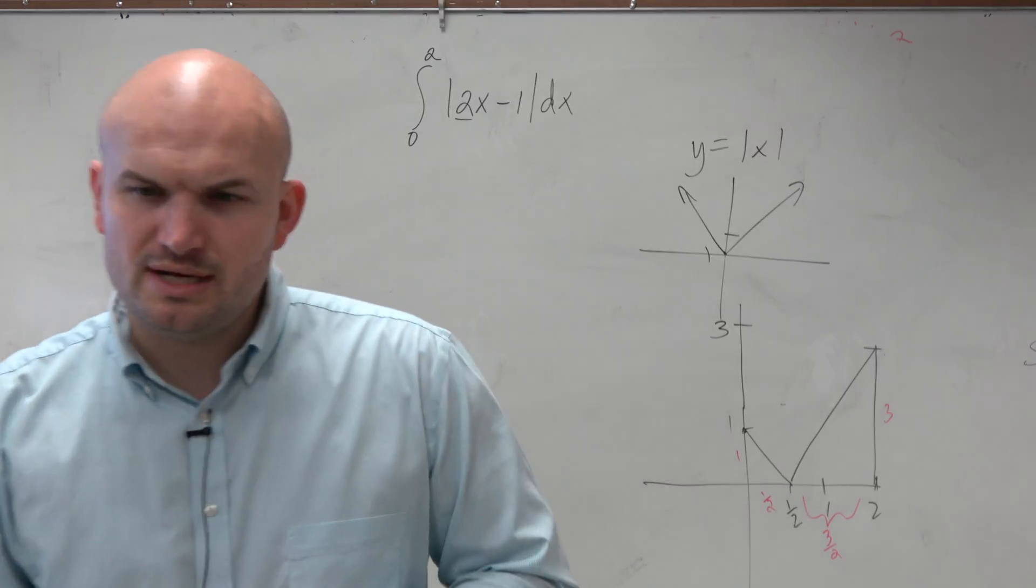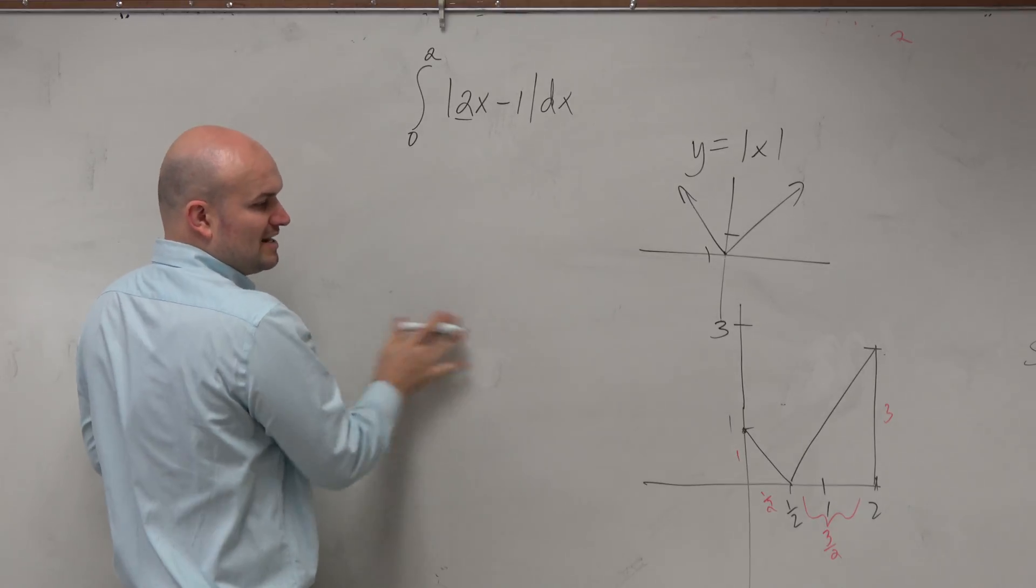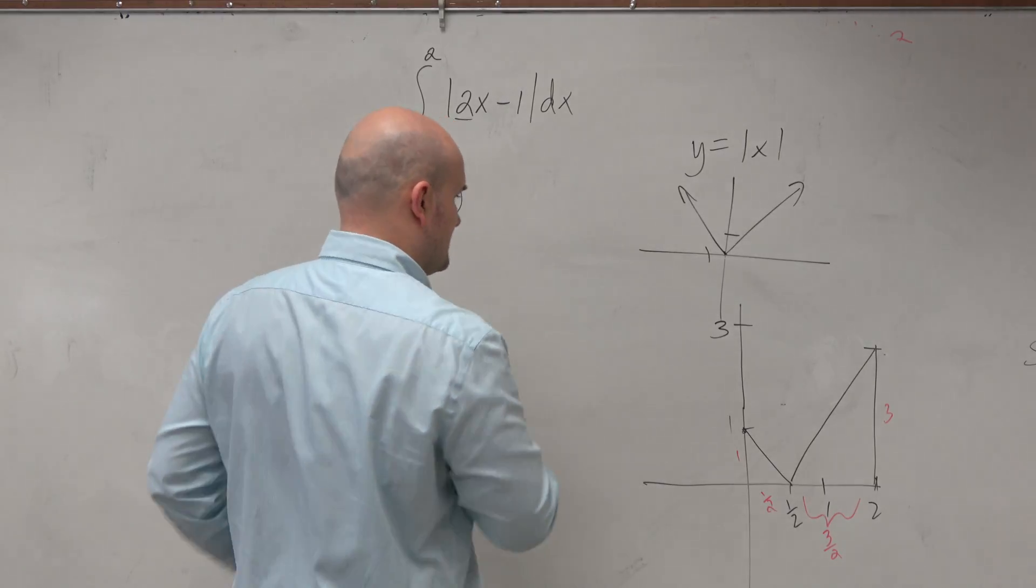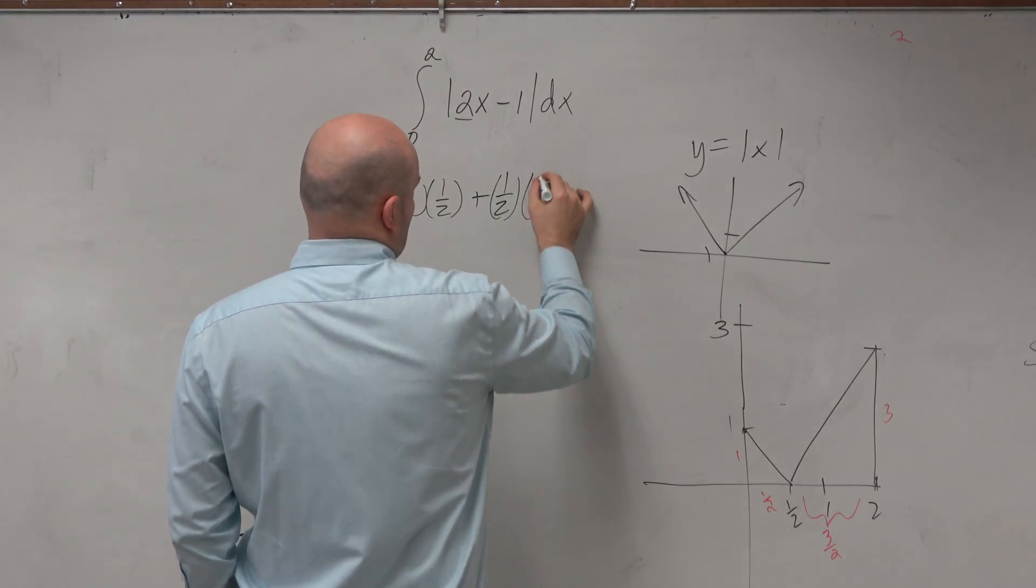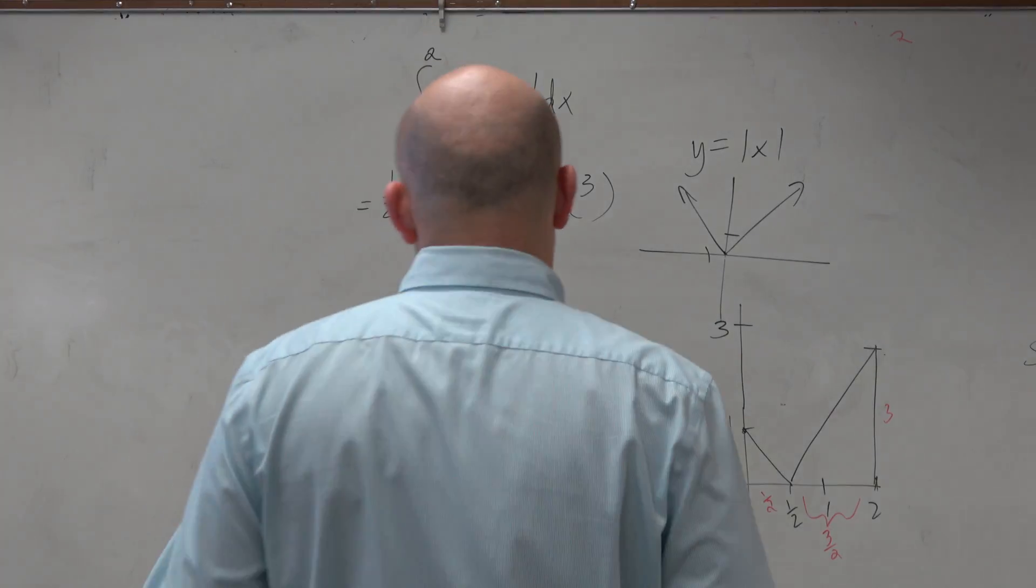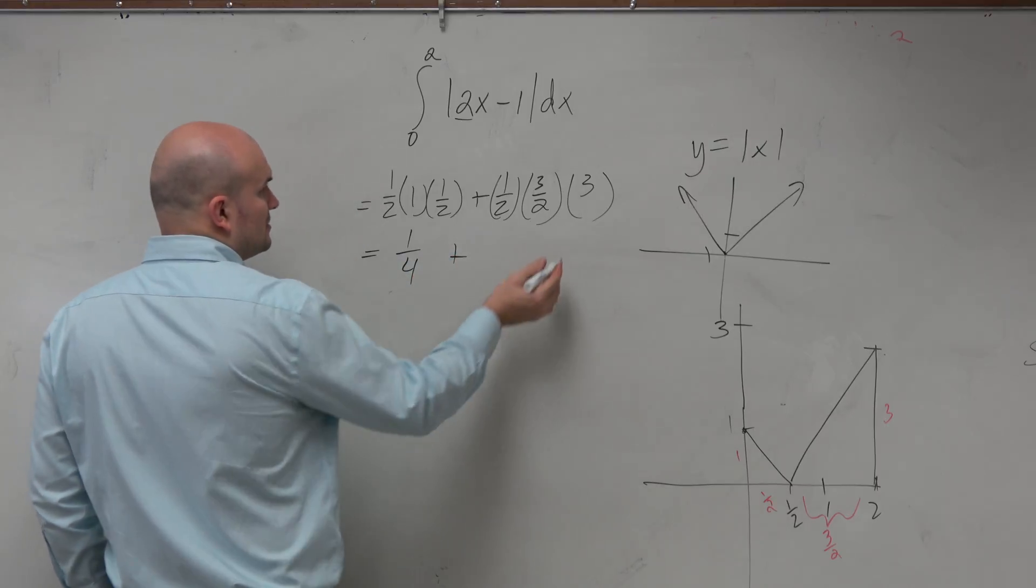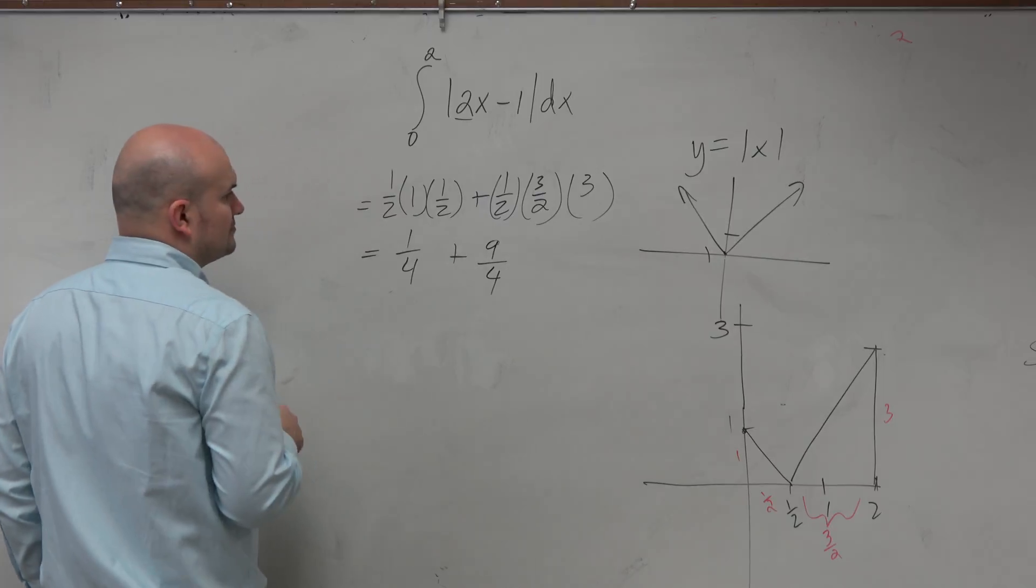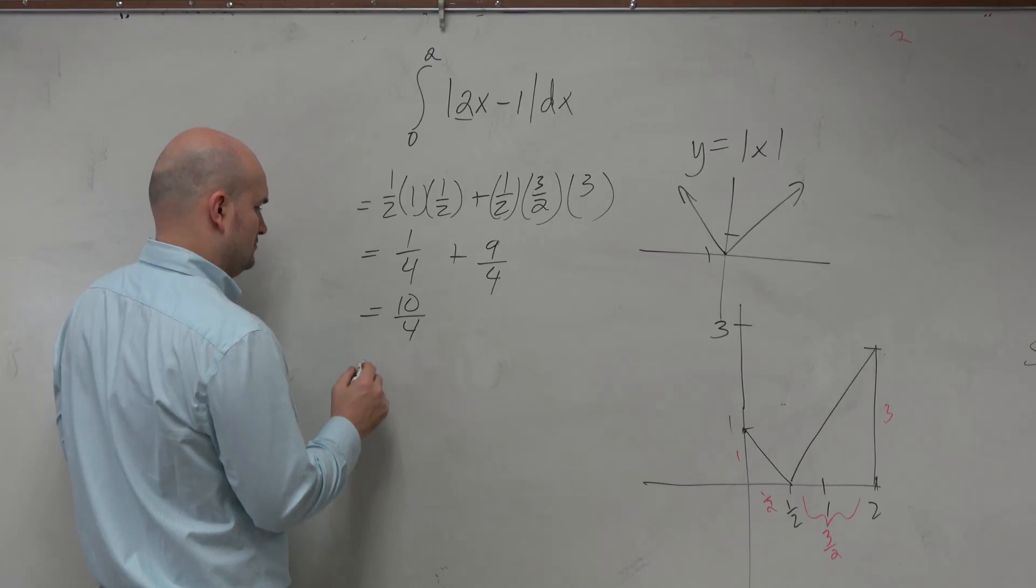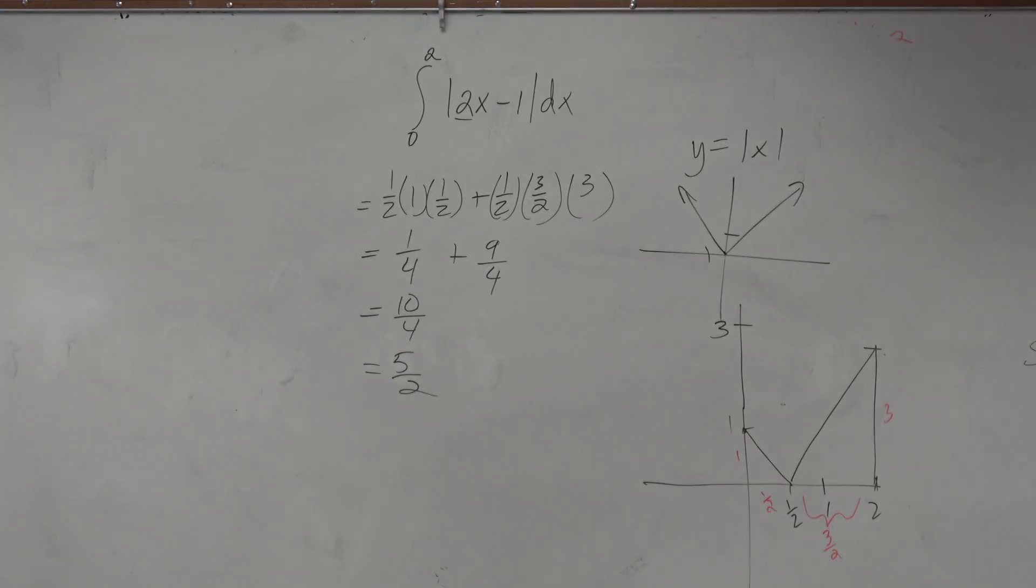Since we're not evaluating, we can just write down what the areas are going to be. So we can say 1 half times 1 times 1 half, and then plus 1 half times 3 halves times 3. Let me just double check my - yep. Because we want to find this basic total area under them. So when we simplify this, we get 1 fourth plus 9 fourths, which equals 5 halves. Does anybody want to type that in a calculator and verify that?